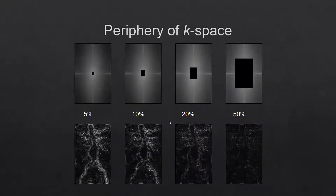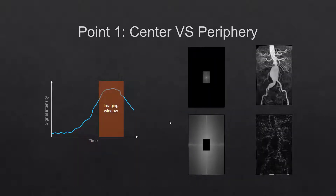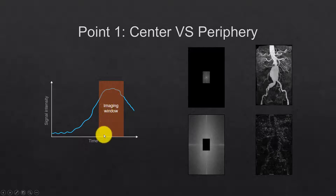When we remove more of the center of k-space, we lose signal intensity. The center of k-space must be filled during the peak contrast, when the contrast is passing through the vascular bed. Acquiring less k-space takes less time, so we can image much faster if we are selective.